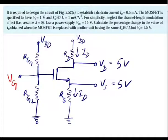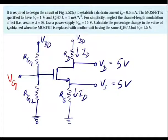We need to calculate the percentage change in drain current when the MOSFET is replaced by another unit having the same KN' W/L value but a threshold voltage Vt = 1.5 volts. So initially we design the circuit for ID = 0.5 mA, and later when the MOSFET is replaced by one with Vt = 1.5 V, we find the new drain current value.